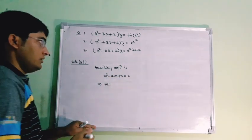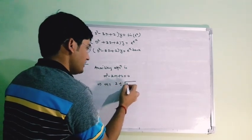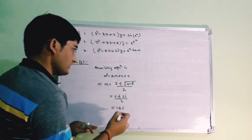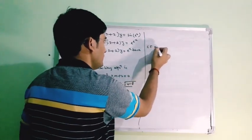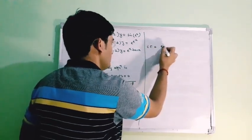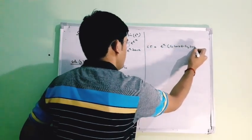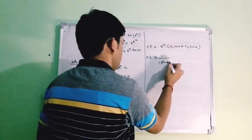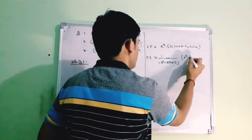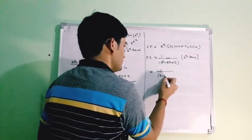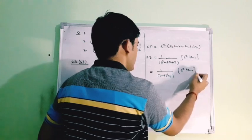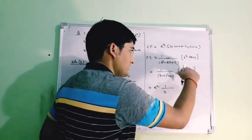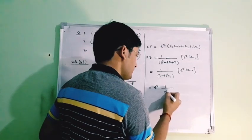For the third problem (D²−2D+2)y = e^x·tan(x): the auxiliary equation is m²−2m+2 = 0. Using the quadratic formula, m = (2 ± √(4−8))/2 = (2 ± 2i)/2 = 1 ± i. So the complementary function is e^x(c₁cos(x) + c₂sin(x)). The particular integral is 1/(D²−2D+2) of e^x·tan(x), which can be written as 1/[(D−1)²+1] of e^x·tan(x). Taking e^x common, D is replaced by D+1, giving e^x · 1/(D²+1) of tan(x).